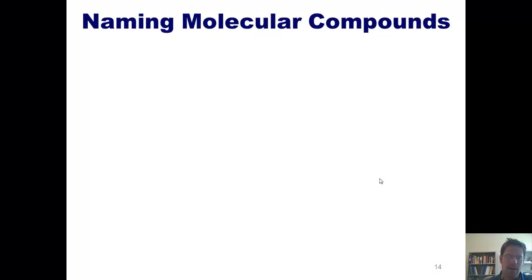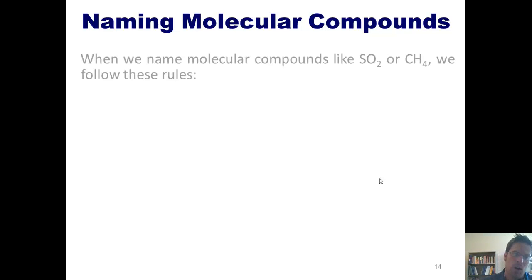Now, we've talked thus far about how to name ionic compounds, which are compounds that contain ionic bonds. But how do we name molecular compounds, that is, compounds that contain all covalent bonds? Well, when we name molecular compounds like SO2 or CH4, for example, we follow these rules.